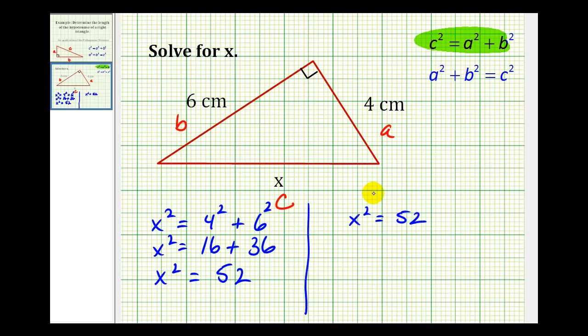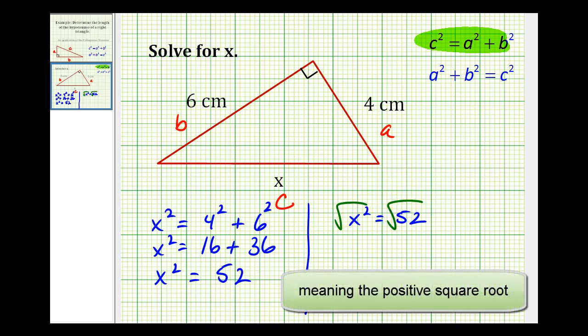Now to solve for X, we'll take the square root of both sides of the equation. And because we know X is a length, we're only going to take the principal square root. So we have X equals the square root of 52.